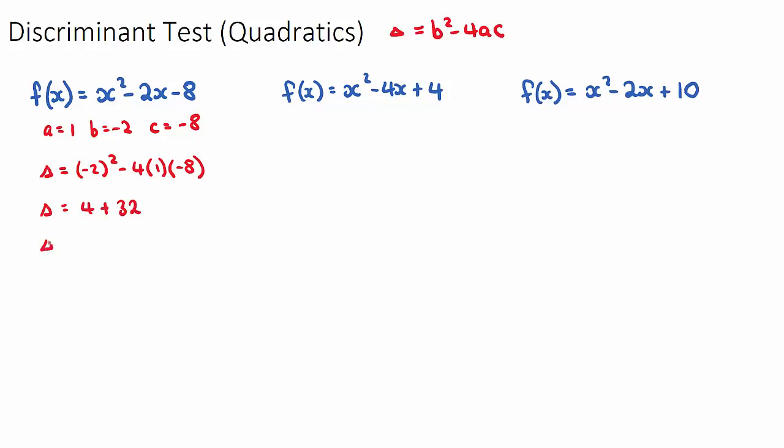If our discriminant is 36, what does that mean? Well, the value of 36 does have a meaning, but it's not super important right now. What we're looking at is if this number is a positive number, zero, or a negative number. 36 is clearly a positive number. And if the discriminant is a positive number, it means that our original quadratic equation will have two real roots, two real distinct roots.